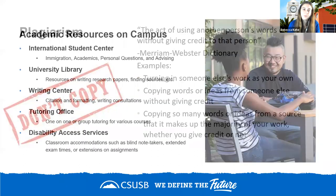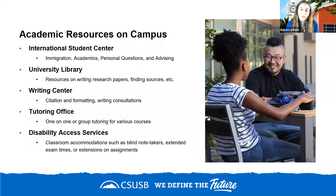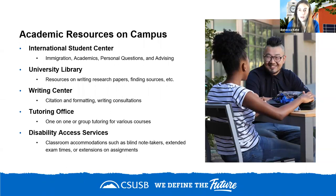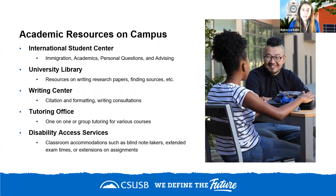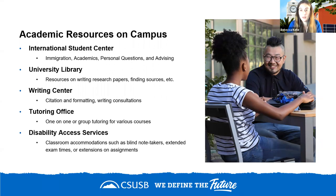Now let's talk about resources you'll find on most US campuses. On any US campus that hosts F1 international students, there will be an international student center or international student advisor. This is your point of contact for immigration questions, personal advising, and seeking academic resources. If you're not sure who to turn to for anything, start with the international office.